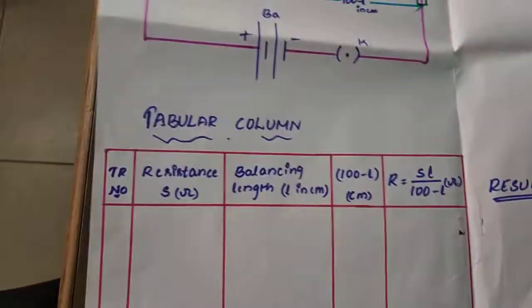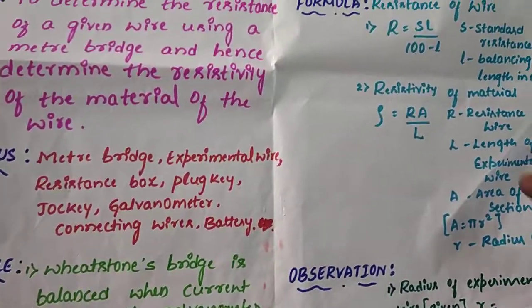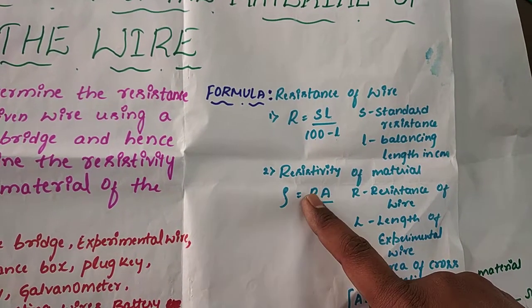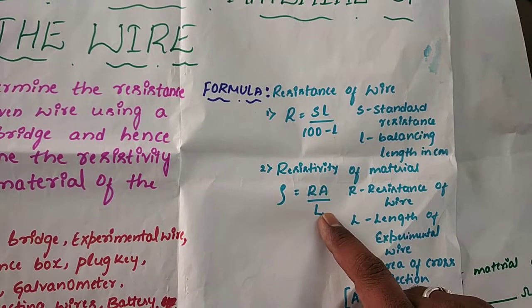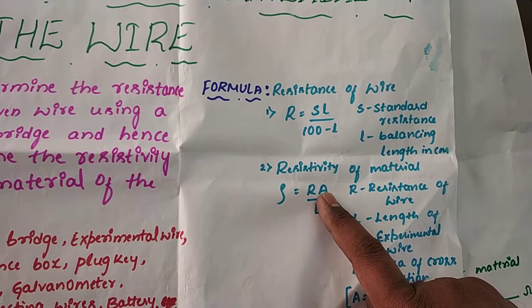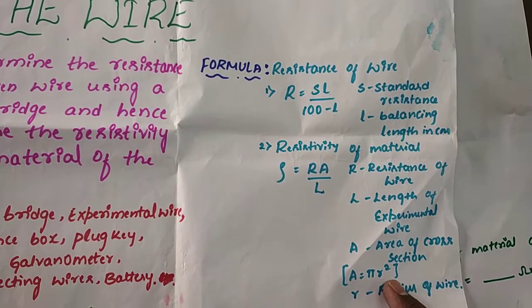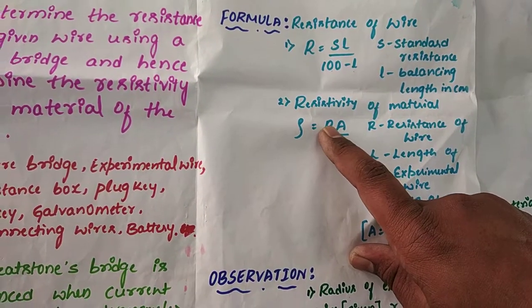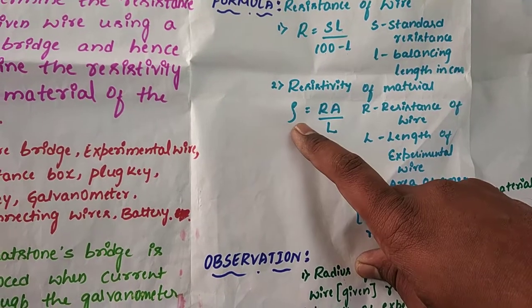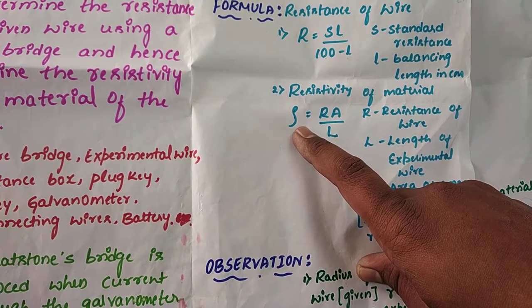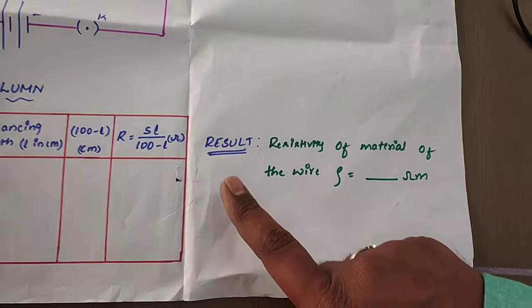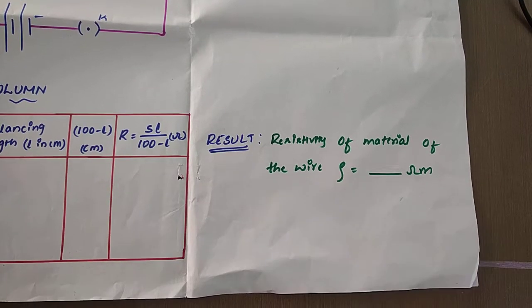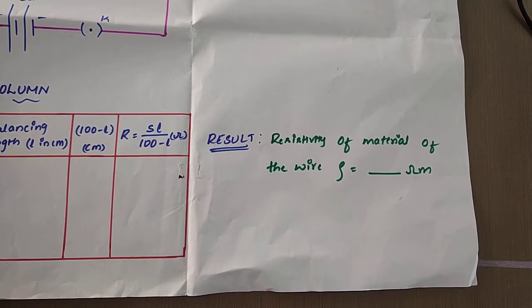After that, substitute the value of R into the resistivity formula: ρ = R × A / L, where A is the area of cross-section of the experimental wire, that is π r². Substitute the values of A, R, and capital L into the formula to get the resistivity of the material of the given wire. Finally, substitute the value of resistivity in the result section. This concludes the experiment. Thank you.